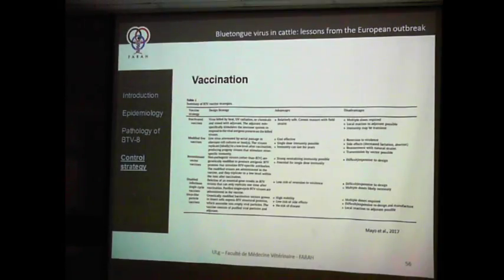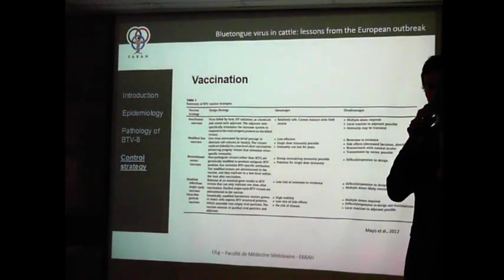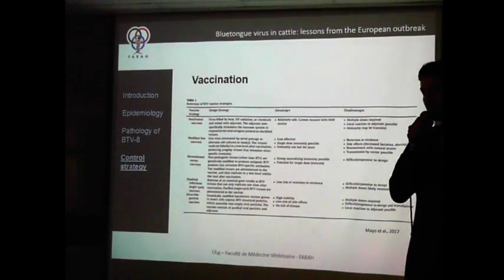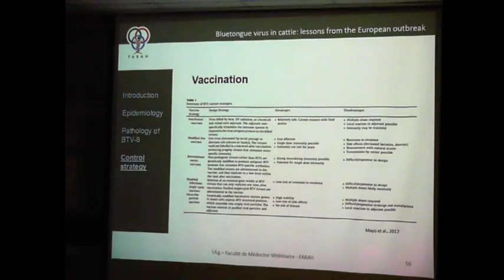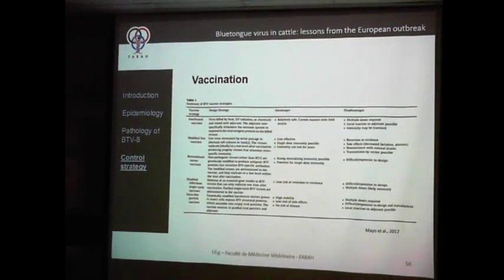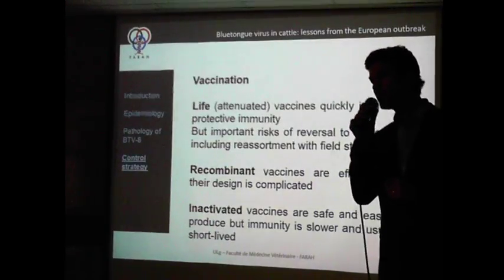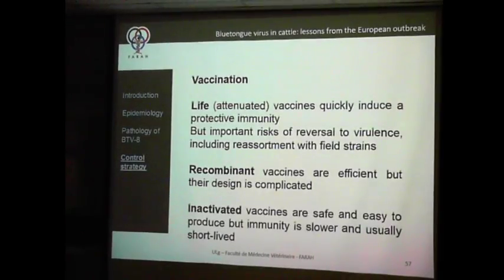Regarding available vaccines: inactivated vaccines like the one we had in Europe are interesting because they are cheap to produce — the virus is amplified and inactivated. They are safe with no risk of amplification, but they are less immunogenic — you need at least two doses to be efficient, and immunity is not as long-lasting as live vaccines. For live vaccines, the main problem is the risk of recombination or reassortment with field strains, which can be a big problem. There are also risks of reversion to virulence.